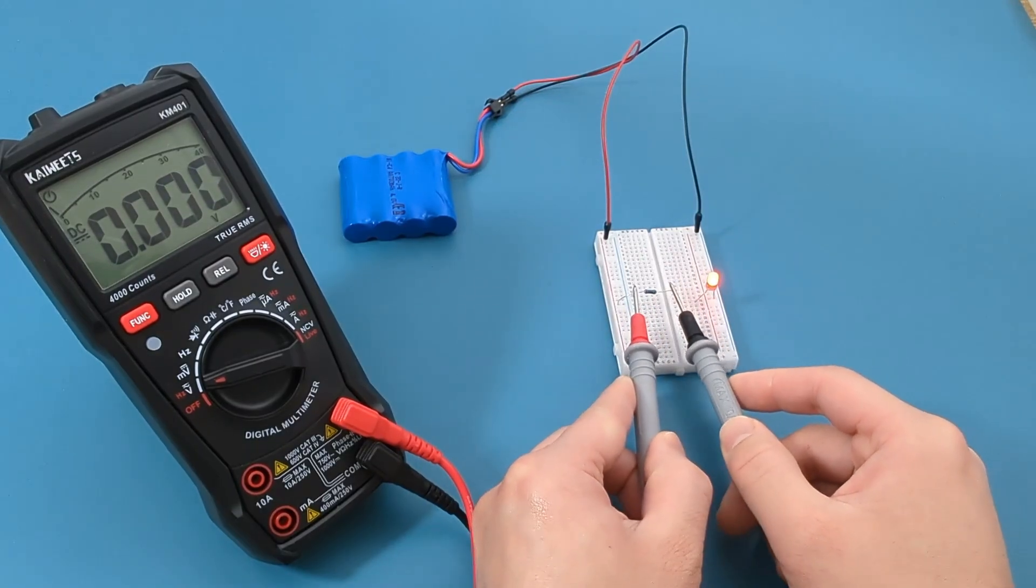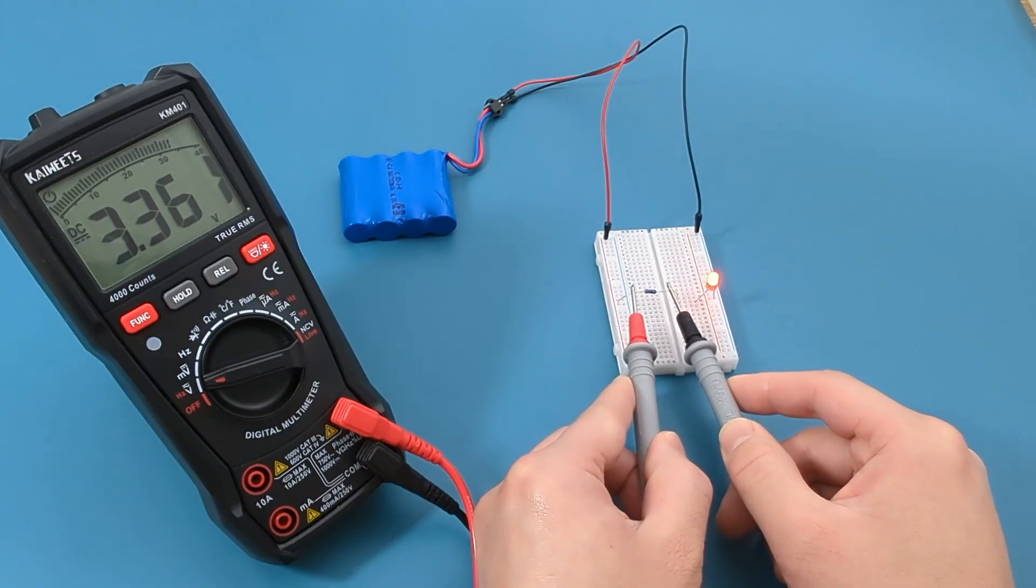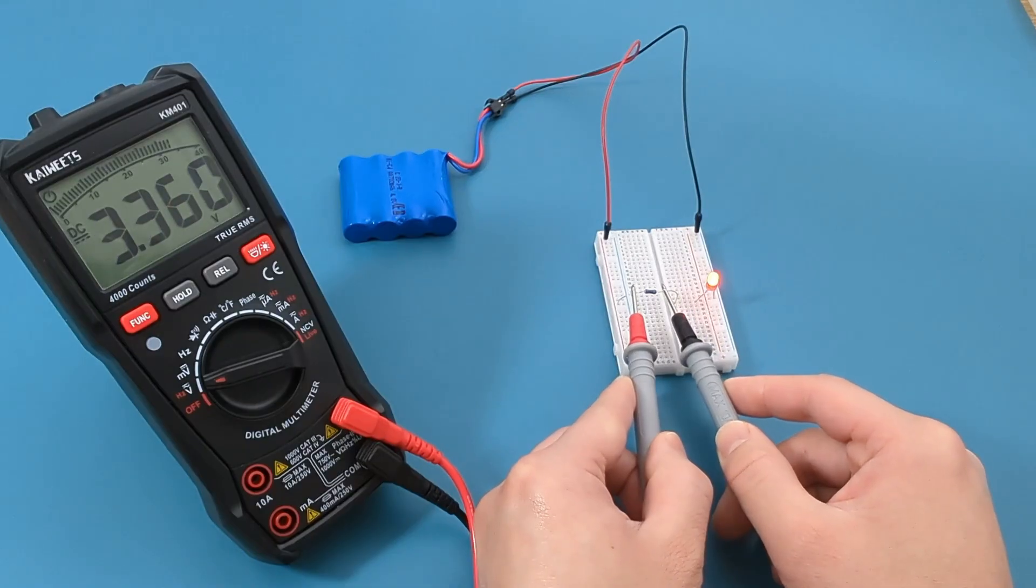The resistor has a voltage of 3.36 volts. As expected, the voltage of the resistor should be the voltage of the battery minus the voltage of the LED.